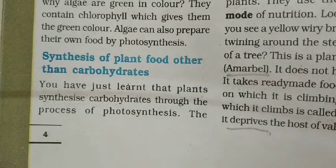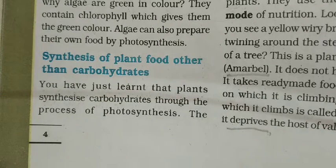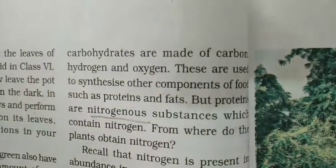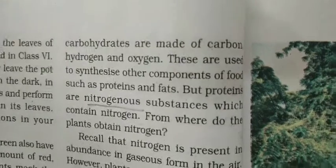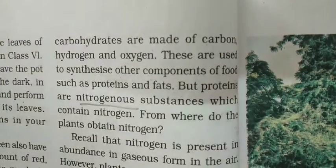Now let us see what else plants synthesize other than carbohydrates. The process of photosynthesis we studied in the previous video synthesizes carbohydrates. Now let us see what else a plant synthesizes from the raw materials it takes in. Carbohydrates are made of carbon, hydrogen, and oxygen, and these are used to synthesize other components of food such as proteins and fats.